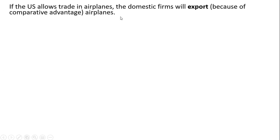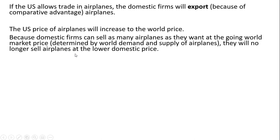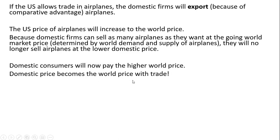If the US allows trade in airplanes, domestic firms will export airplanes to the rest of the world, and the US price of airplanes will increase to the world price. Because domestic firms can sell as many airplanes as they want at the going world market price — as determined by world demand and supply — they will no longer sell at the lower domestic price. So the domestic price becomes the world price with trade.